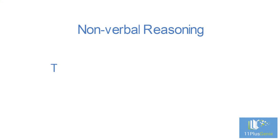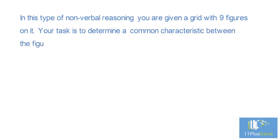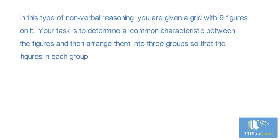Nonverbal reasoning type 17: grouping of identical figures. In this type of nonverbal reasoning, you are given a grid with nine figures on it. Your task is to determine a common characteristic between the figures and then arrange them into three groups so that the figures in each group are similar to each other. It is important that you group all of the figures in the question before you choose an answer.